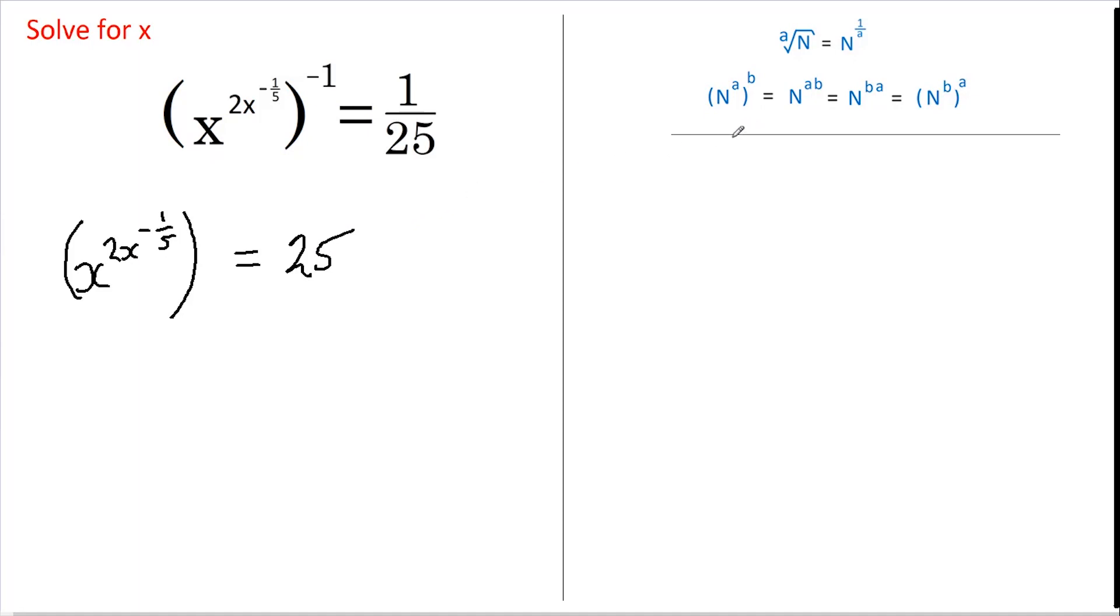This rule tells us that if we've got a number raised to a power and that's all raised to another power, then we can rewrite that as the number raised to the powers multiplied together. So this becomes x to the 2x multiplied by negative 1/5, and this still equals 25, which I'm going to rewrite as 5 squared.